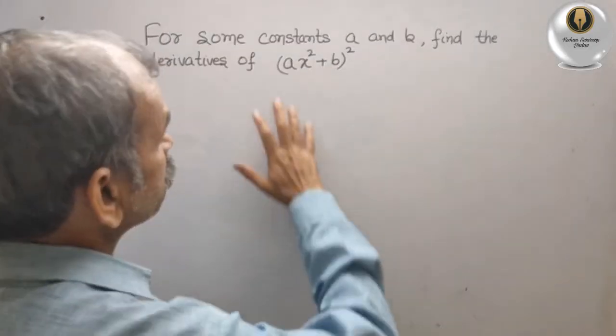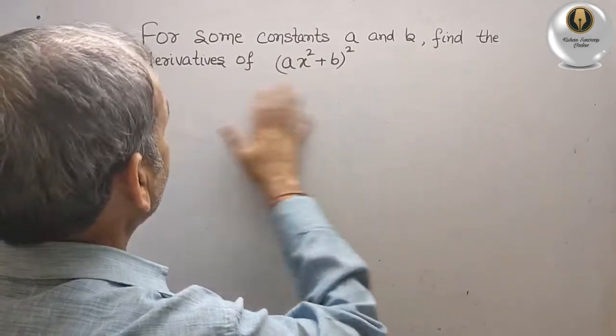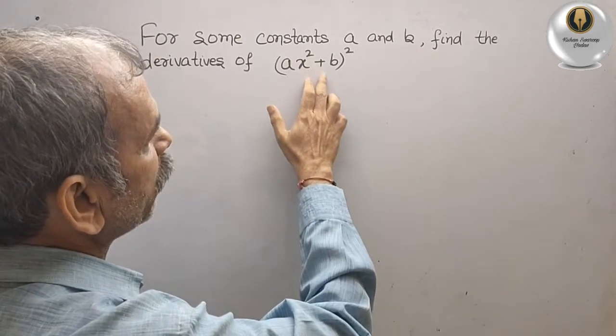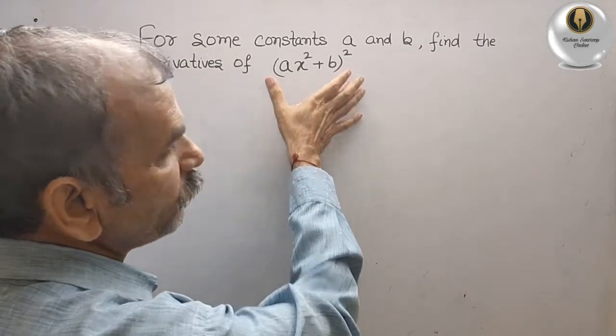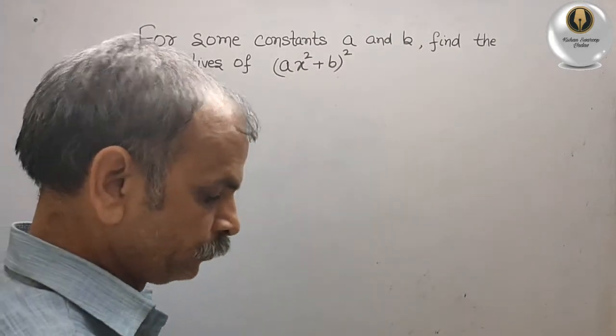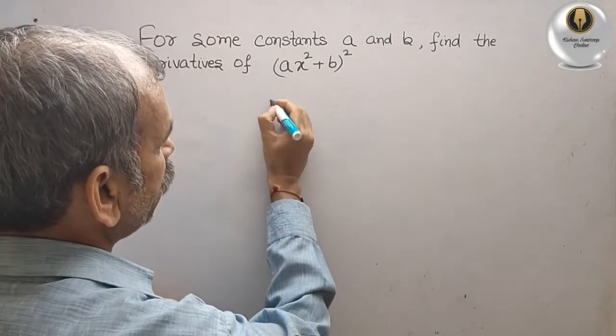Your question is: for some constants a and b, find the derivatives of (ax² + b)². First, what we will do is try to solve it. We will get a²...